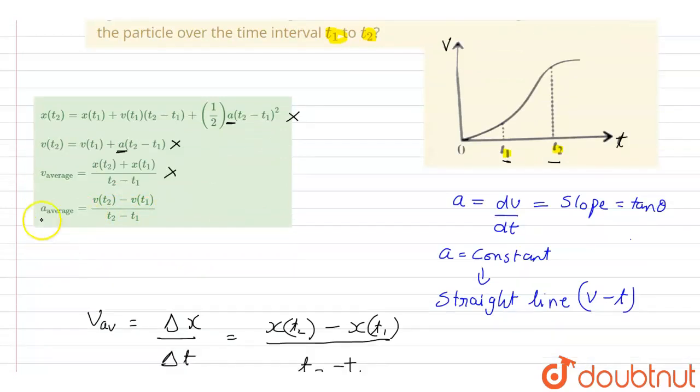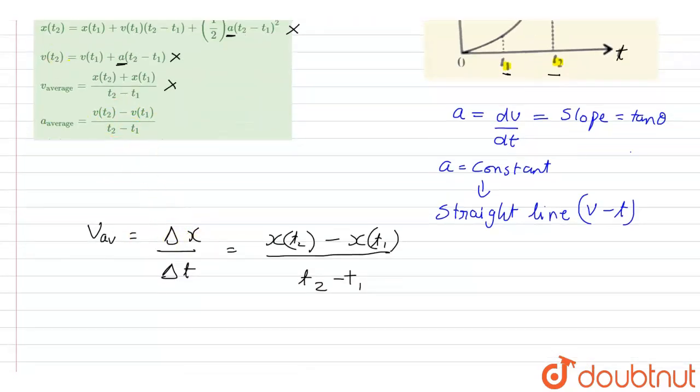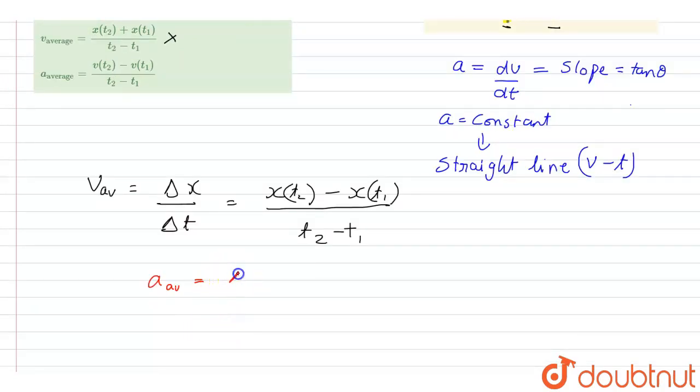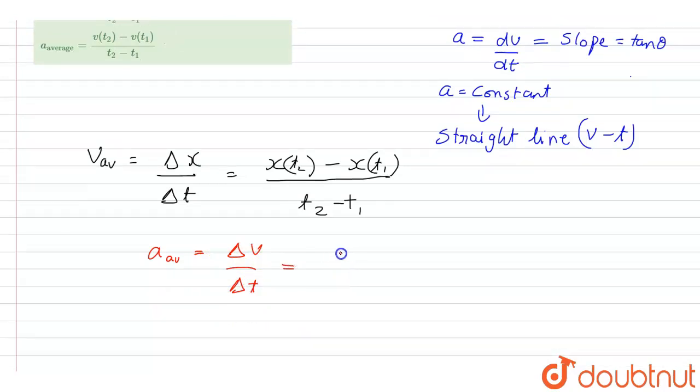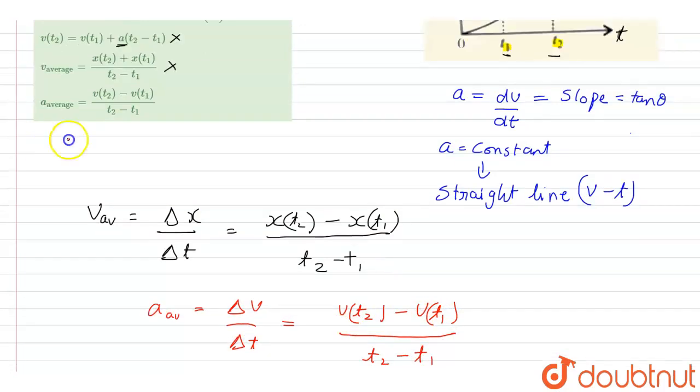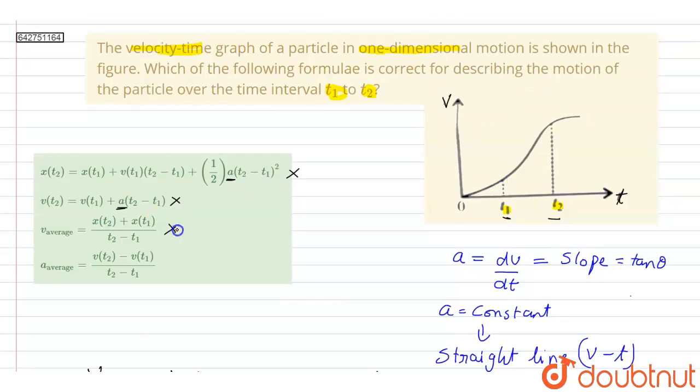Now the last option is average acceleration. We know that average acceleration is in a similar way given as Δv/Δt, final velocity minus initial velocity. So this will be v(t2) - v(t1) divided by t2 - t1. So this will be average acceleration, and this is equal to option D. So this is correct. The correct option will be option D.